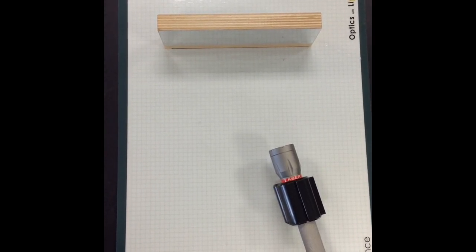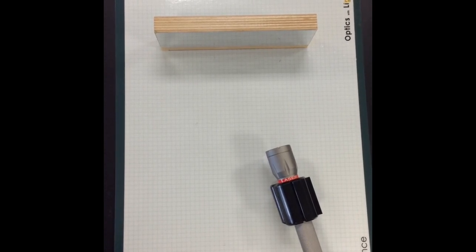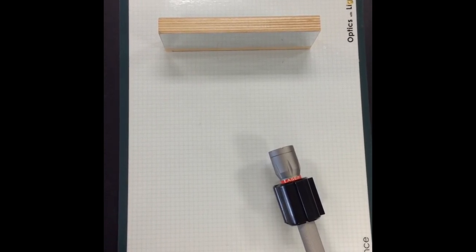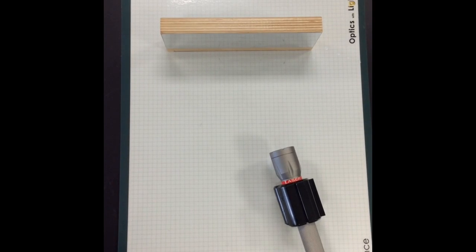The second thing that we're going to be using is a mirror. The third thing will be the CPO Optics Light and Color board. This is a grid paper.